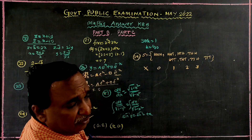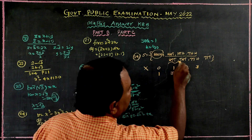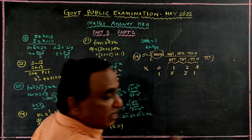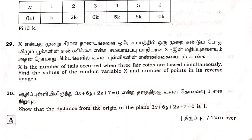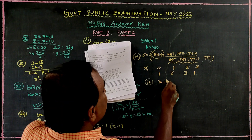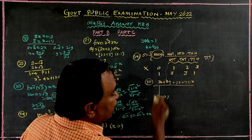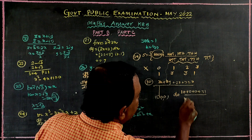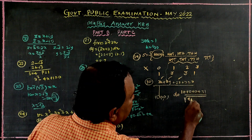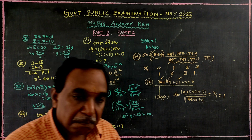Problem number 29: the number of inverse images — 1 chance is 3, 2 chance is 3, 3 chance is 1. Using the distance formula, the distance equals 0 plus 0 plus 0 plus 7 divided by root of a squared plus b squared plus c squared, which gives root of 9 plus 36 plus 4. This simplifies to 7 divided by 7, which equals 1. This is part B.